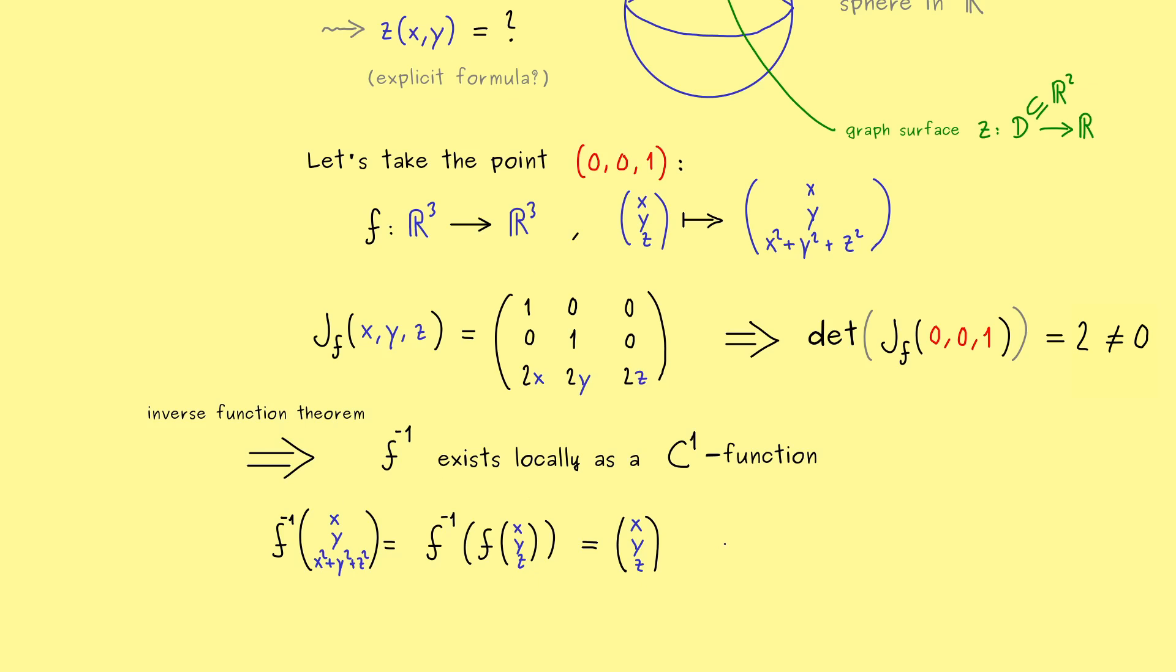Hence it also works if we restrict it to our sphere. Hence what we want is what happens if we put (x, y, 1) into the inverse function. Because there we know that for each x and y, this point lies on the sphere. And by using the equation from the left hand side, we already know that we don't change the variables x and y at all.